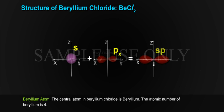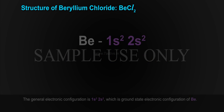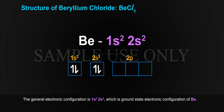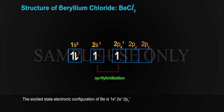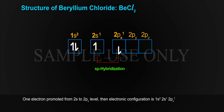Structure of Beryllium Chloride (BeCl2): The central atom in BeCl2 is beryllium (Be). The atomic number of beryllium is 4. The ground state electronic configuration is 1s², 2s². The excited state electronic configuration of Be is 1s², 2s¹, 2px¹ — one electron is promoted from the 2s to the 2px level.